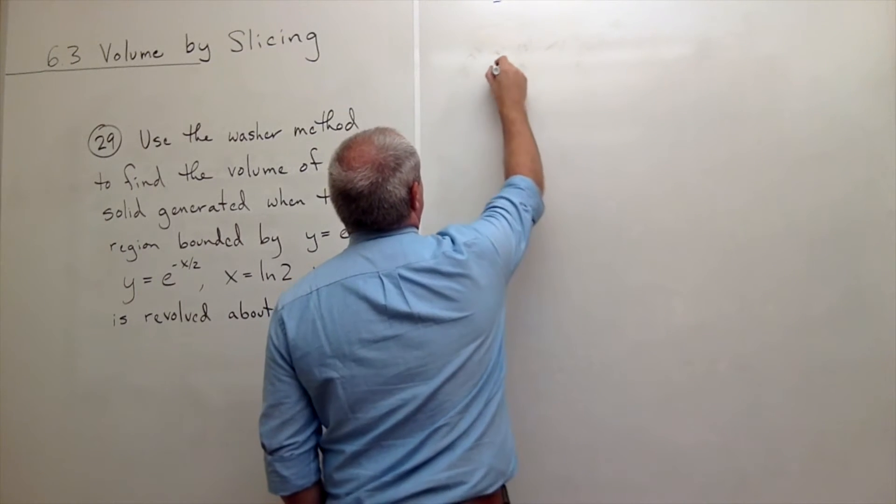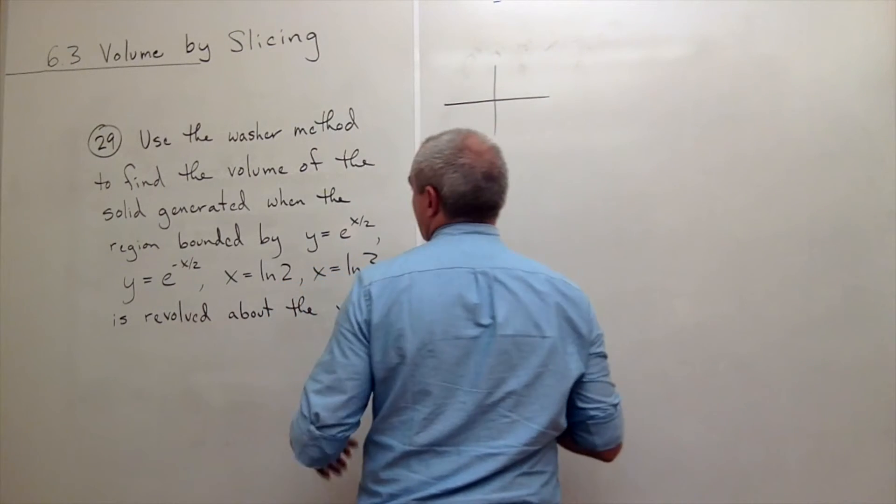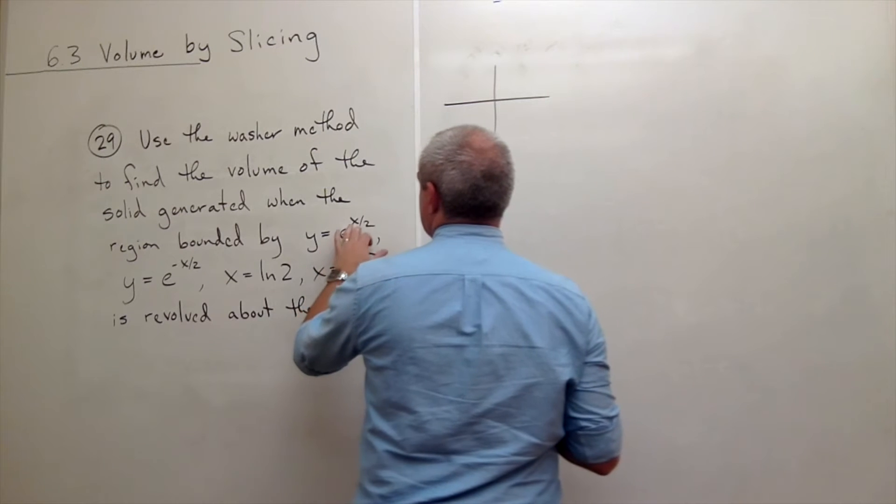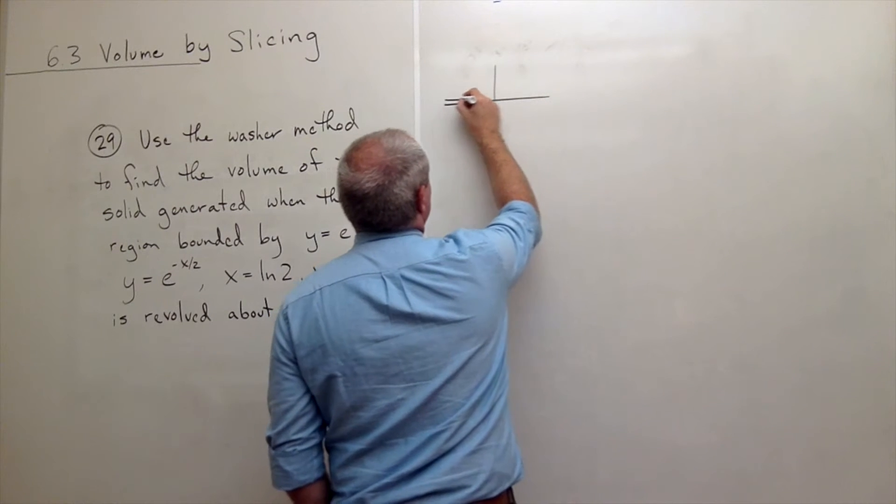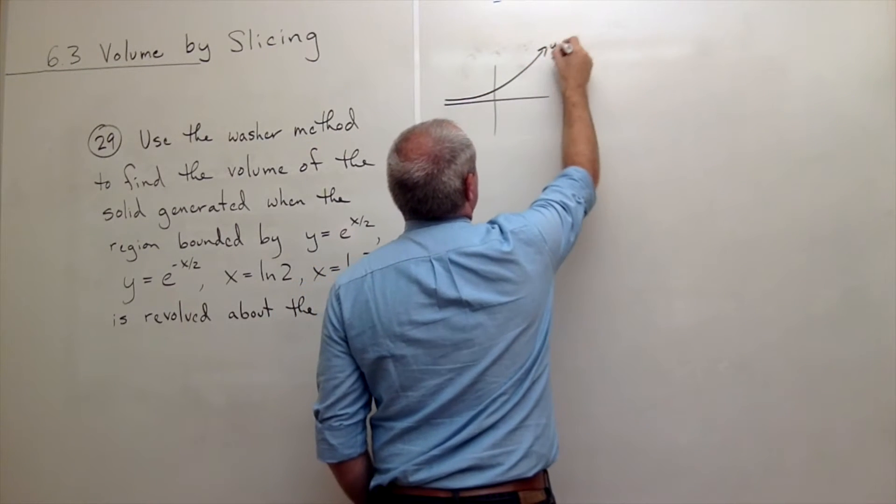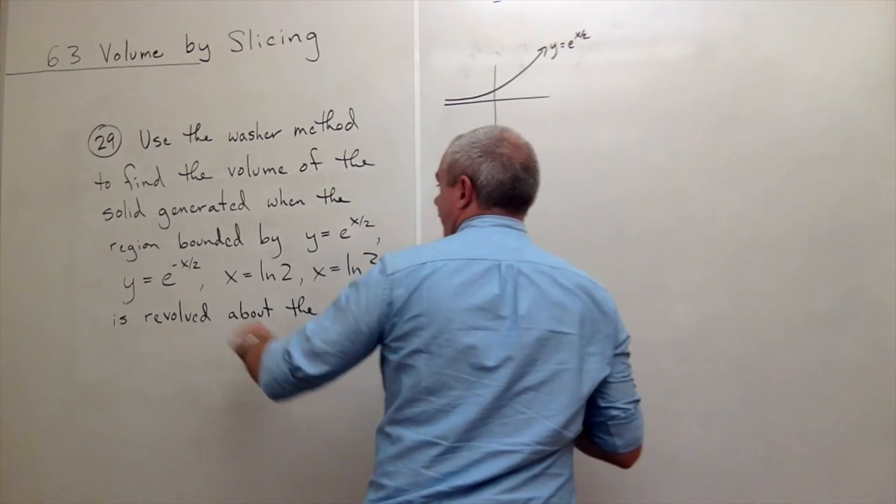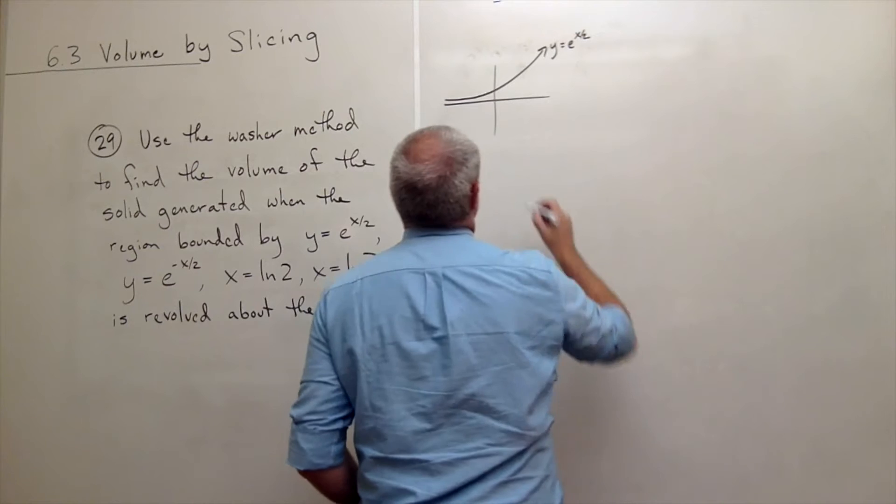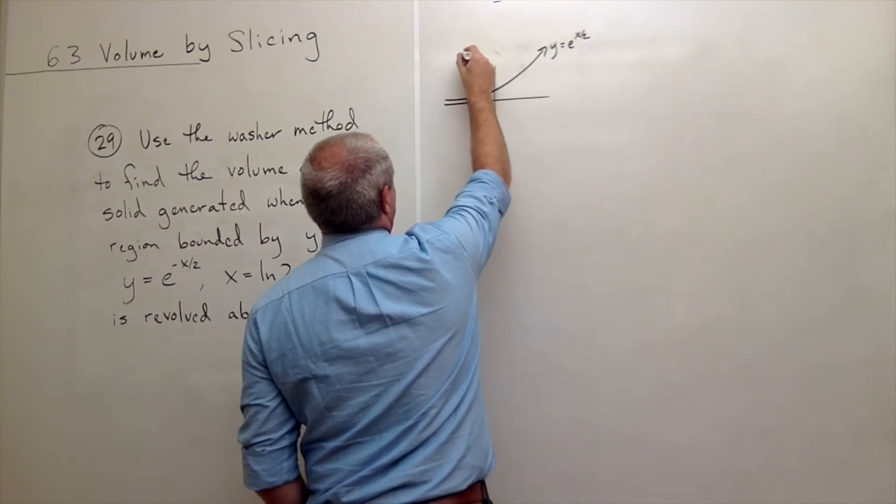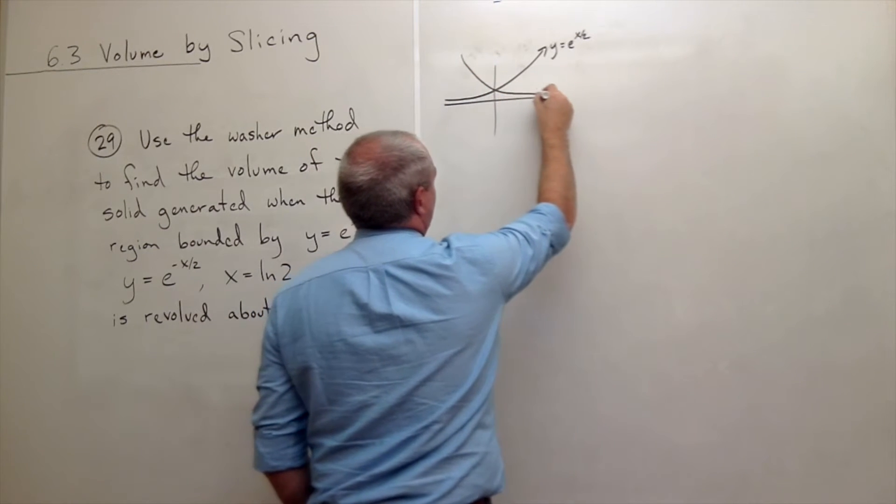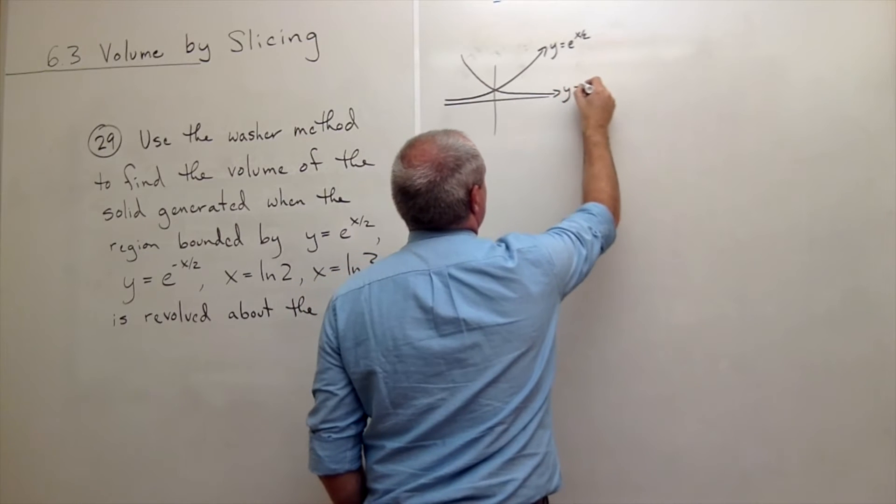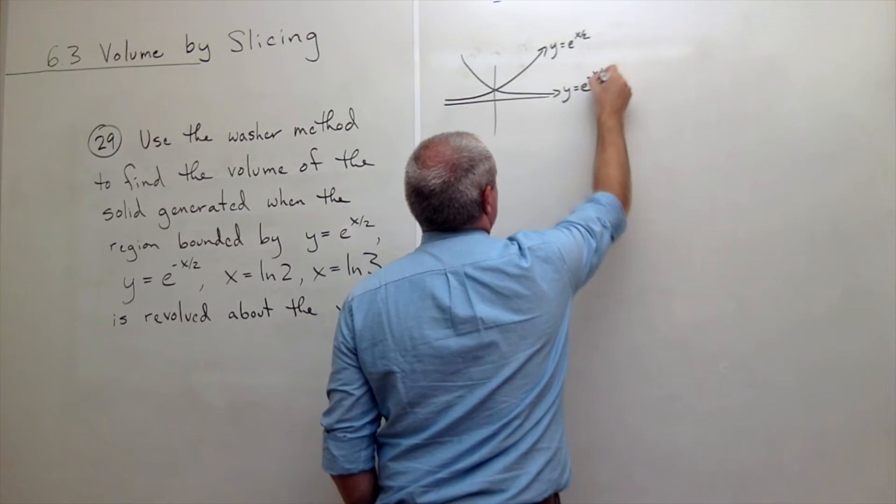So let's draw my x and y axis up here. We've got y equals e to the x over 2. This is y equals e to the x over 2. We've got y equals e to the negative x over 2 which looks sort of like this. This is y equals e to the negative x over 2.